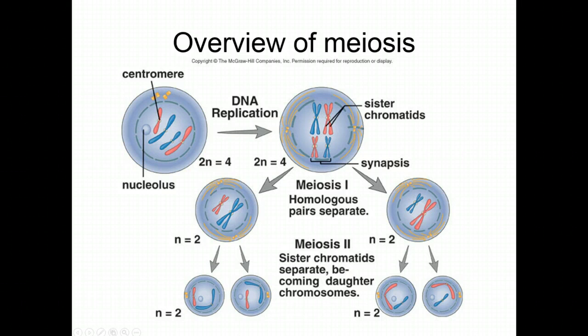Meiosis begins to differ from mitosis in that in meiosis there are two rounds of cell division. The first round of cell division is going to separate the homologues, but the chromatids will still be attached. The second round of cell division will then separate the chromatids so that you have four cells.